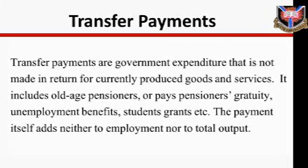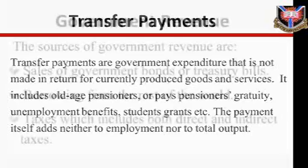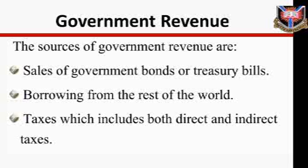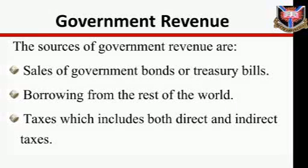Government revenue: how does the government finance its predetermined expenditure? From the revenue it can generate. The sources of government revenue are: (a) sales of government bonds or treasury bills, (b) borrowing from the rest of the world, and (c) taxes.